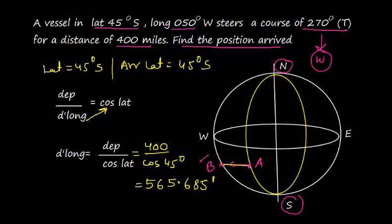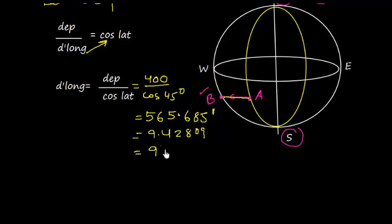So I divide this by 60, I get 9.428109. And if I convert this in degrees and minutes, I get 9 degrees 25.7 minutes, or 9 degrees 25 minutes 41 seconds. Well, we can round off this figure, and I simply can write 9 degrees 25.7.